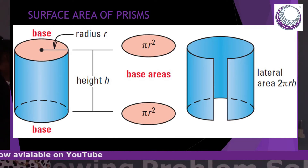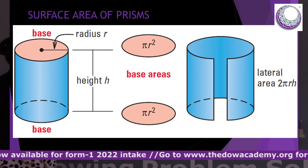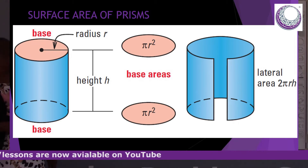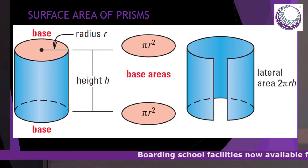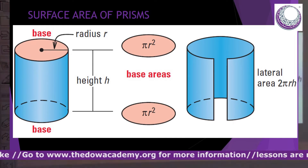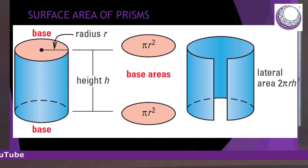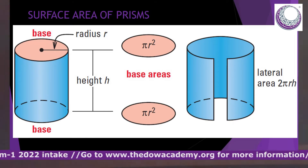Looking at our cylinder, if we are just calculating what we call the lateral area or curved surface area, we are focusing only on the blue curved part. But where we need the surface area of the whole object, that is when we need to consider the curved part, the top part — which happens to be a circle — and the bottom part, which is another circle. So the total surface area is the sum of those three: the curved part plus these two circles.